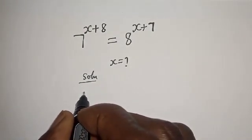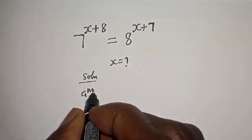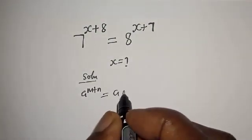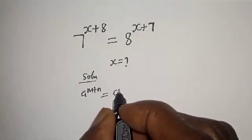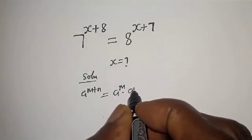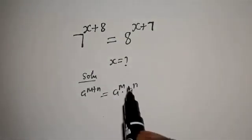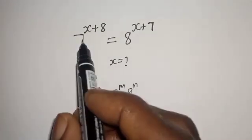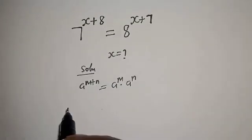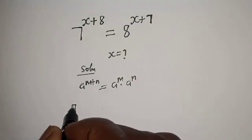Note that a raised to power m plus n is equal to a raised to power m multiplied by a raised to power n. Then 7 raised to power x plus 8 can be written as 7 raised to power x multiplied by 7 raised to power 8.